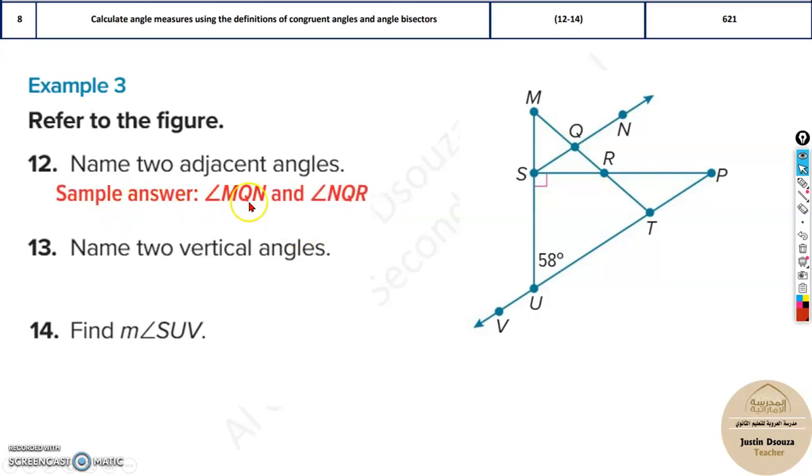Over here the sample answer is MQN and NQR. So these both, say over here, these both are next to each other. So they are adjacent.